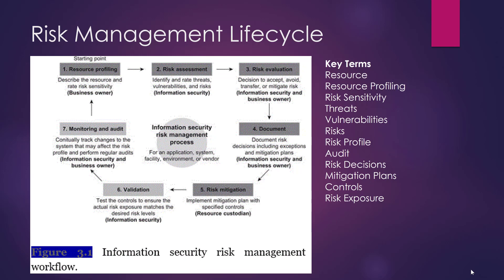We then move into the decision-making phase: are we going to accept the risk, avoid the risk, transfer the risk, or mitigate the risk? From there, we have to document exactly what decisions and exceptions were made, move into mitigation approaches to figure out what controls we need to implement to lower our risk, validate those controls are actually doing what we think they're doing, and then monitor and audit to make sure that doesn't change. Then you start the entire cycle all over again. This is our risk management lifecycle.